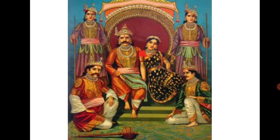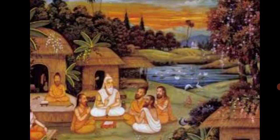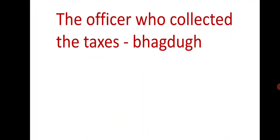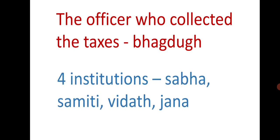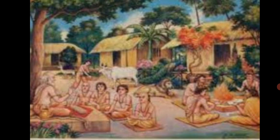In order to run the administration smoothly, the king appointed various officers. The Purohit (priest) and the Senapati of the army were officers of special importance. The officer who collected taxes was known as Bagdud — 'Bag' meaning share, the person who collected the king's share of the produce. There were four institutions that guided the king: Sabha, Samiti, Vidat, and Jana. The people of the state participated in their working, and women too participated in the working of Sabha and Vidat. The Sabha consisted of senior citizens, whereas the Samiti was a general body of the people.